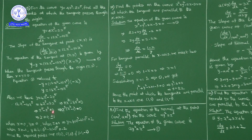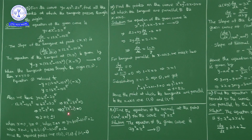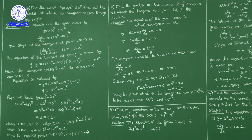So x⁵ - x³ = 0. Taking x³ common: x³(x² - 1) = 0. This gives x³ = 0 or x² - 1 = 0. From x³ = 0, x = 0. From x² - 1 = 0, (x - 1)(x + 1) = 0, so x = 1 and x = -1. The possibilities are x = 0, x = 1, and x = -1.